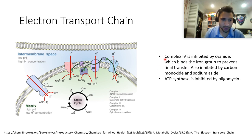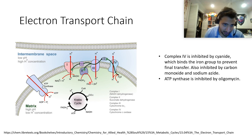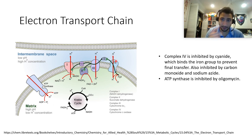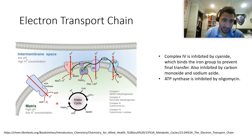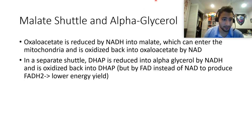NADH acts at complex 1, FADH2 acts at complex 2, and you get more energy from NADH because there are more reactions and a hydrogen is released. Cyanide acts at complex 4, which is the final electron transfer. Cyanide binds to the iron there and prevents that final transfer, which causes issues with ATP synthase — that's why cyanide is a poison.